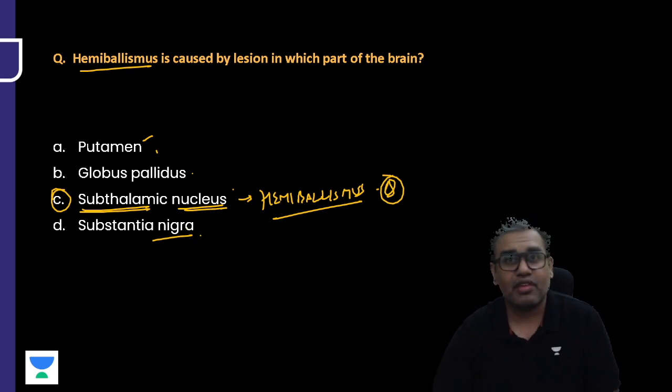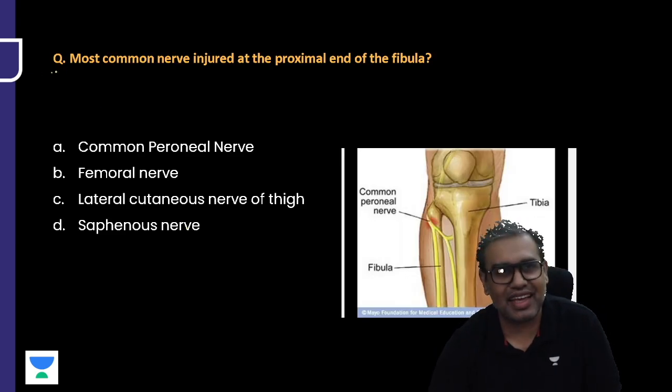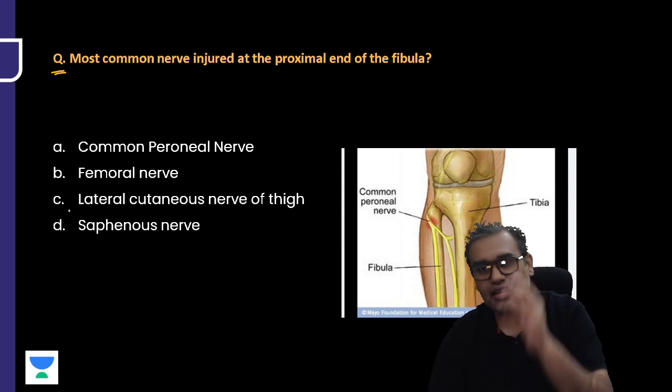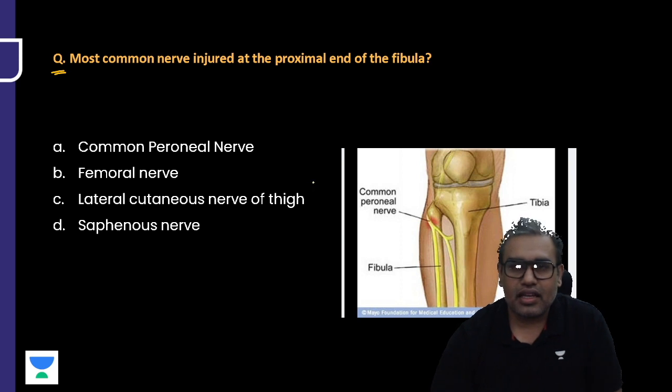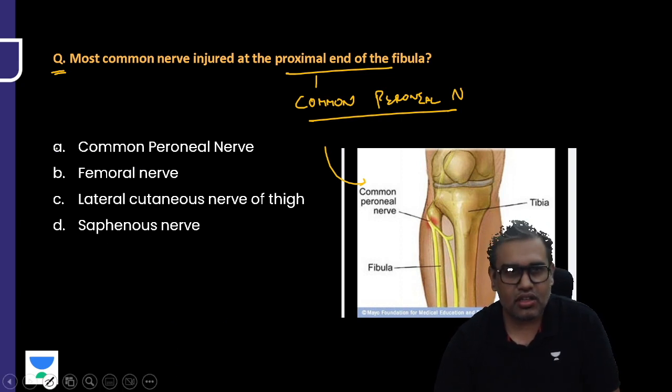Another repeated and not very difficult, average question. Most common nerve injured at the proximal end of fibula? What is the nerve injured at the proximal end of fibula? The figure is also shown. The most common nerve injured in the lower limb per se is the nerve winding around the neck of fibula, that is the common peroneal nerve, being a branch from the sciatic nerve. Obviously option A would fulfill and that is the answer.